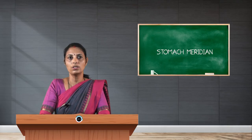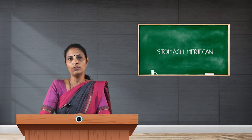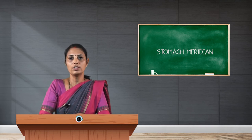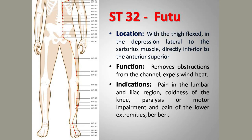Stomach 32, Futu (femur Futu), is located 6 cun above the superior border of the patella on the anterior lateral aspect of the leg. It is mainly used to treat paralytic conditions, especially to strengthen and tonify the muscles. Needling technique is 1 to 2 cun straight.